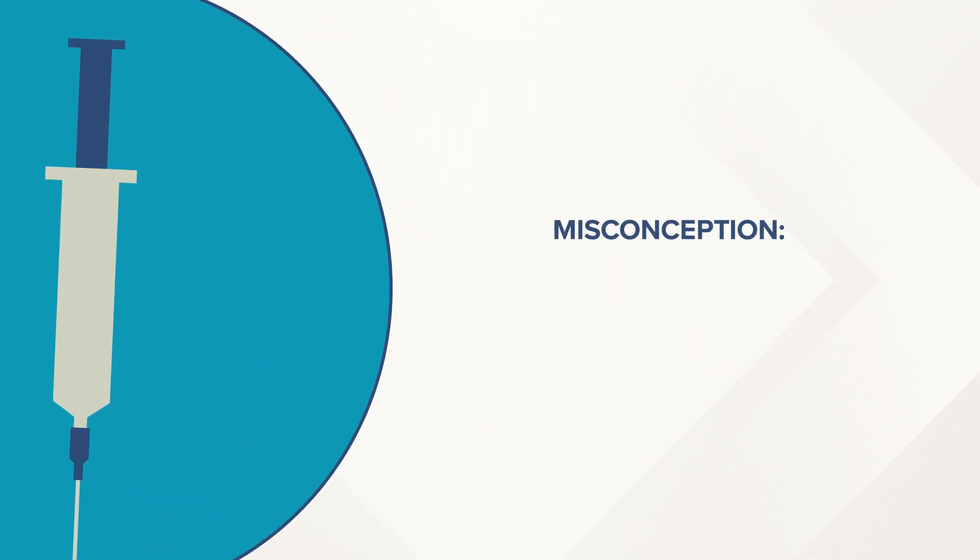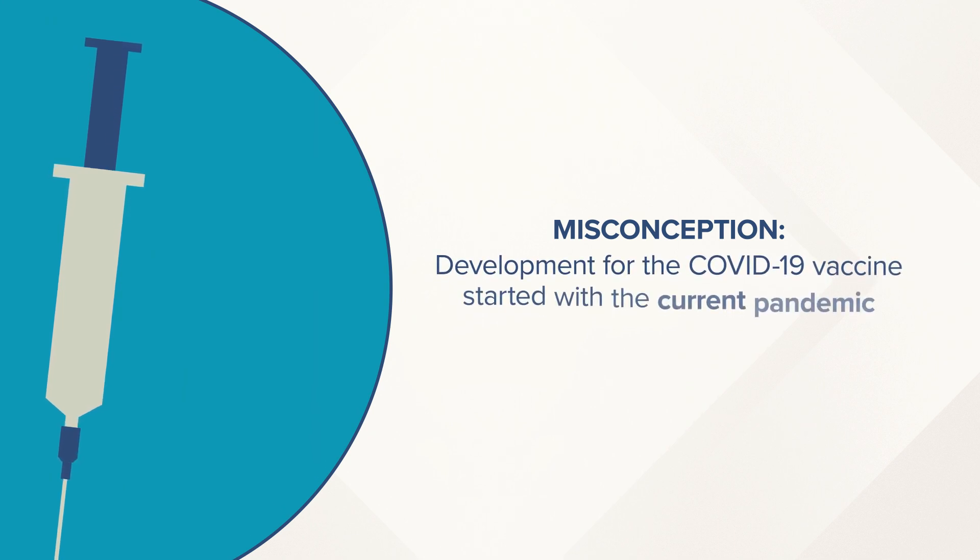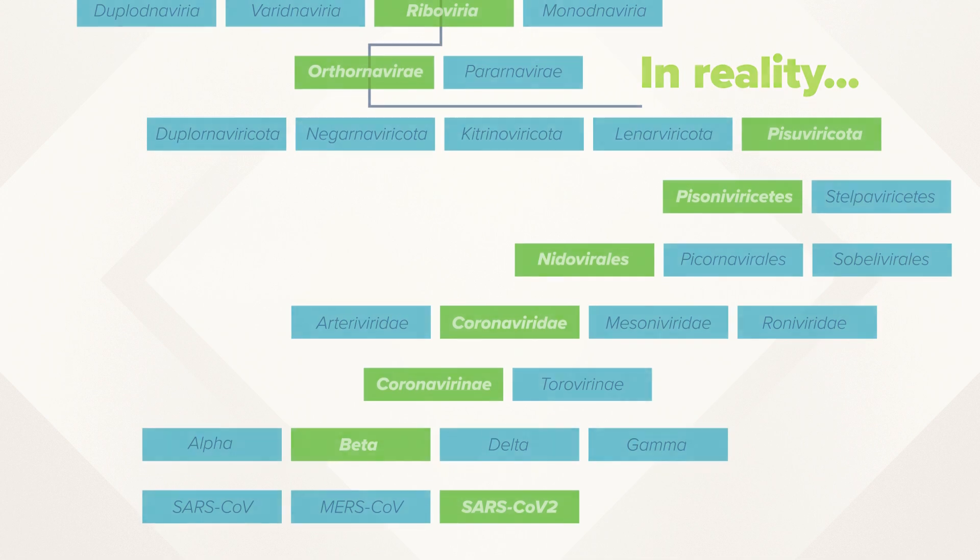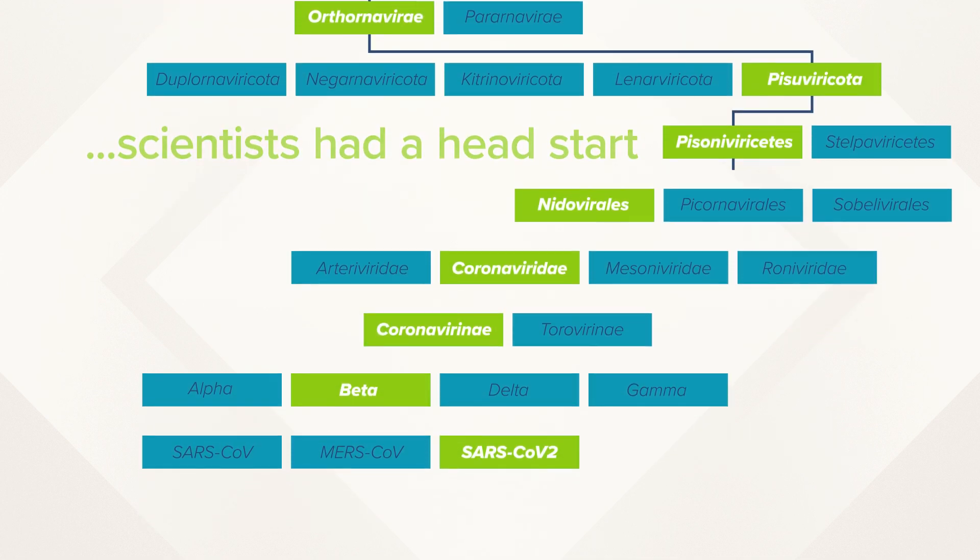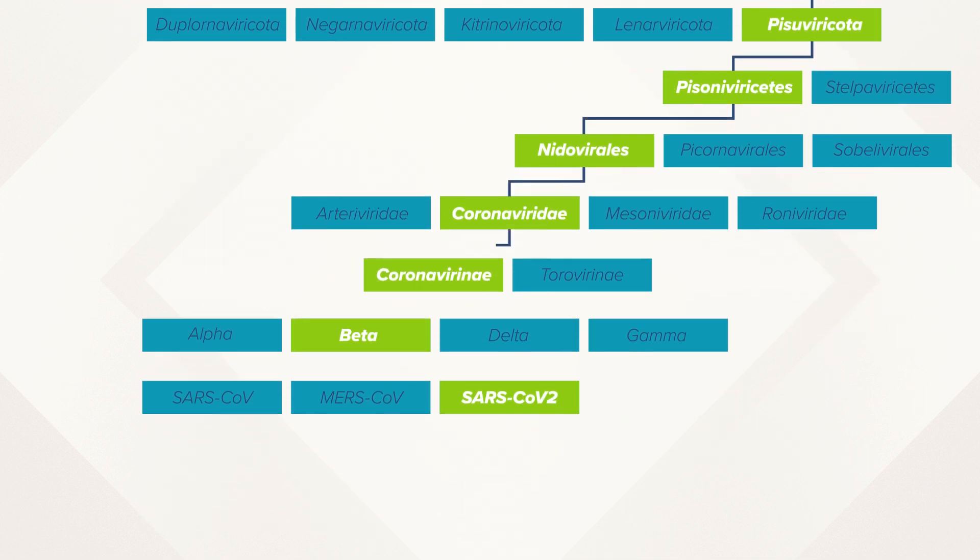One of the biggest misconceptions about the COVID-19 vaccine is that its development started with the current pandemic. In reality, scientists had a head start. That's because COVID-19 comes from a family of viruses,